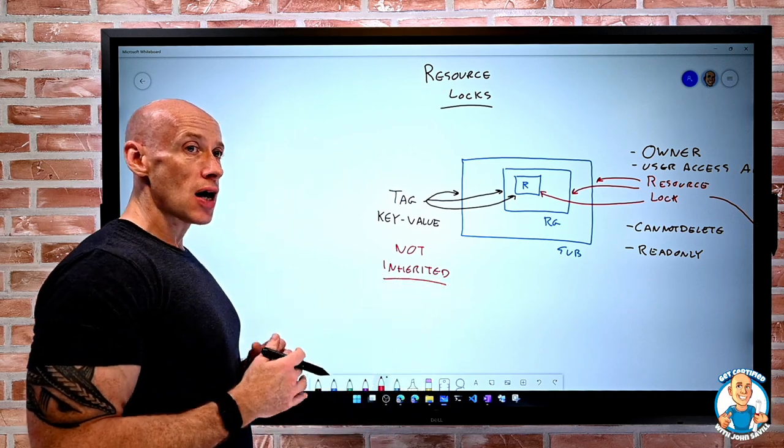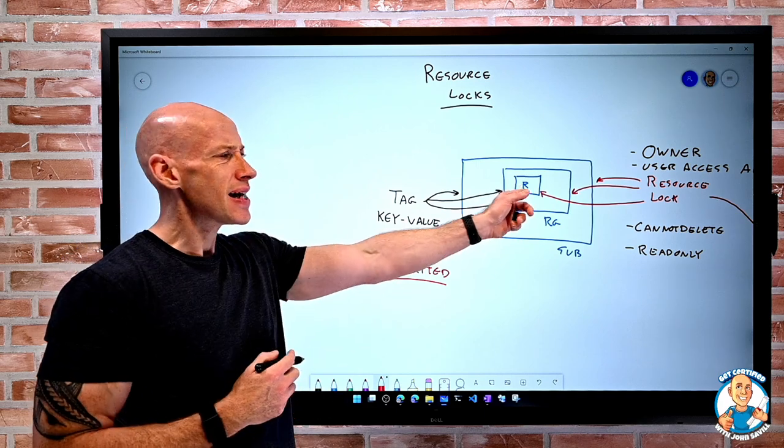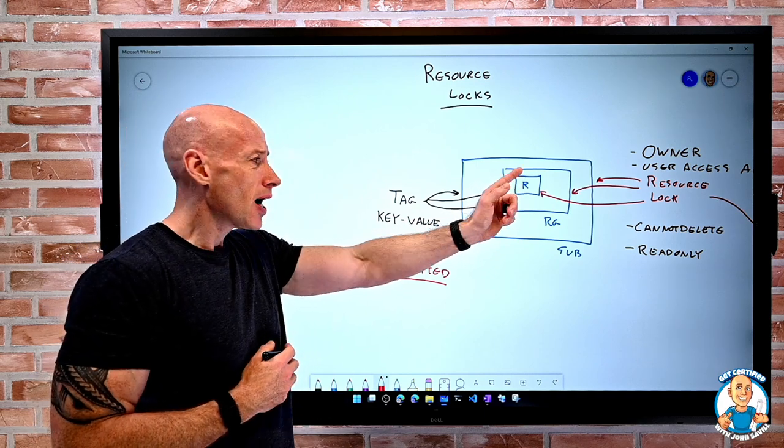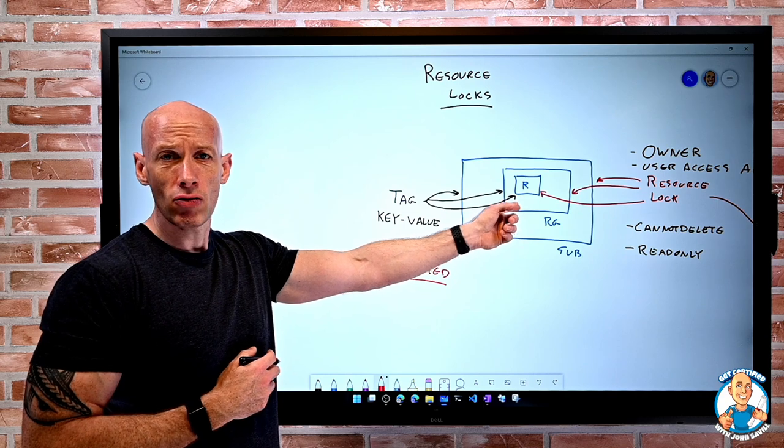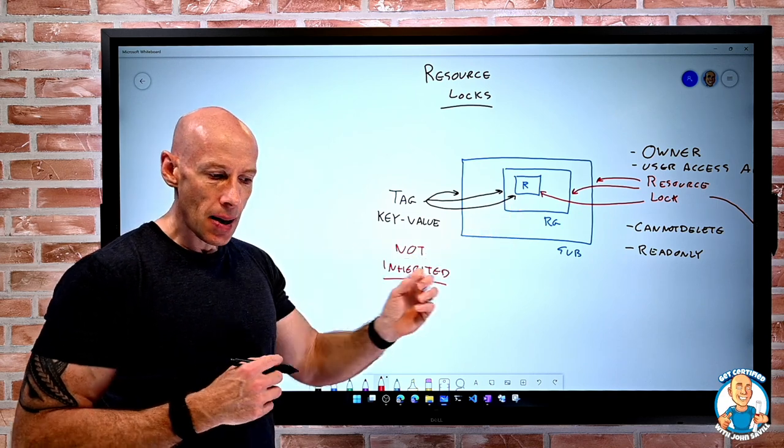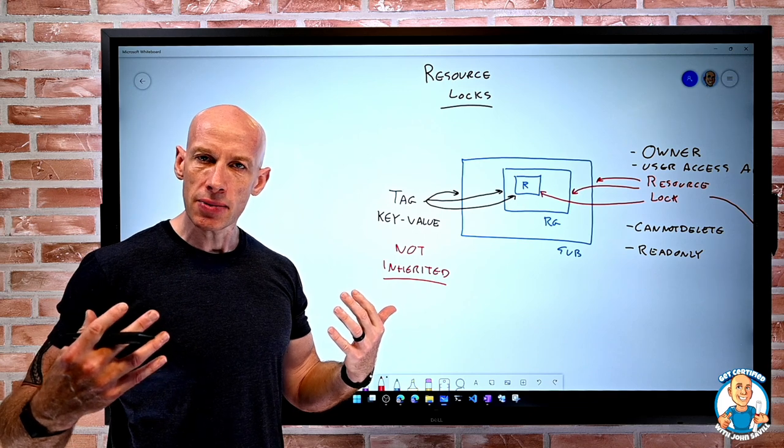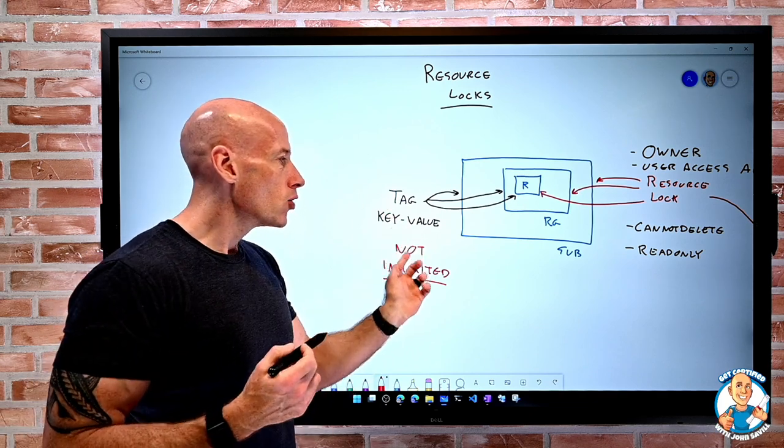If I want that to happen, I can use Azure policy. I could have a policy that says, if I'm missing a tag on this resource, copy the value from its parent resource group or copy it from its parent subscription. But under normal circumstances, these are not inherited.